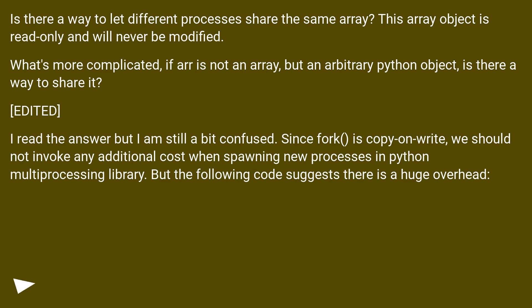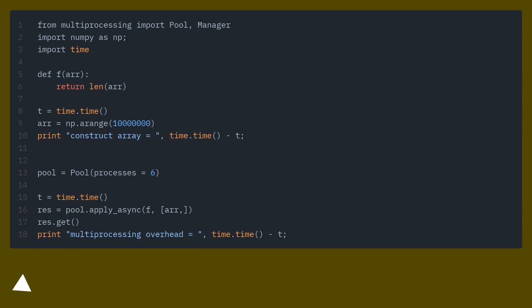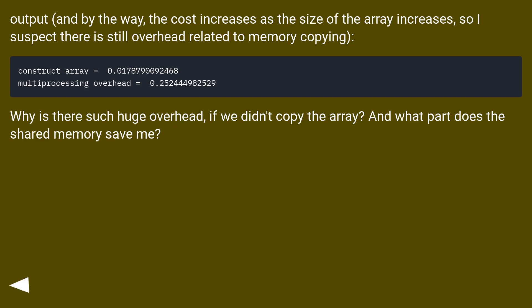I read the answer but I am still a bit confused. Since fork is copy-on-write, we should not invoke any additional cost when spawning new processes in Python's multiprocessing library. But the following code suggests there is a huge overhead. The cost increases as the size of the array increases, so I suspect there is still overhead related to memory copying. Why is there such huge overhead if we didn't copy the array? And what part does the shared memory save me?